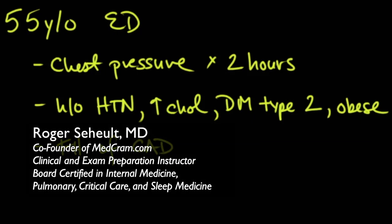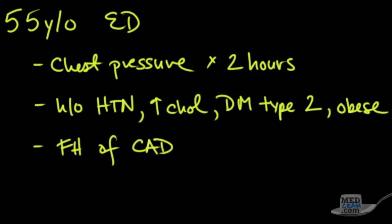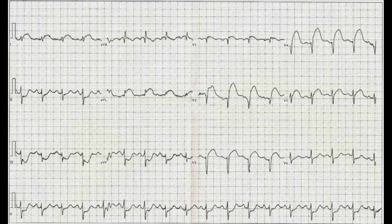We have a case here: a 55-year-old male who presents to the emergency room with chest pressure for two hours. History of hypertension, high cholesterol, type 2 diabetes, and obesity, and he has a family history of coronary artery disease. We go ahead and get an EKG on the patient, and this is what we receive.